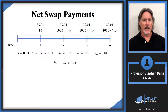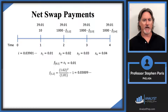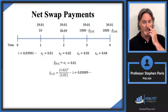At time two, I need the forward rate from time one to time two. The two-year spot rate is 2% and the one-year spot rate is 1%, so I get approximately 3.009% for that forward rate. The payment at time two is 1,000 times 0.03009, which is about $30.09.